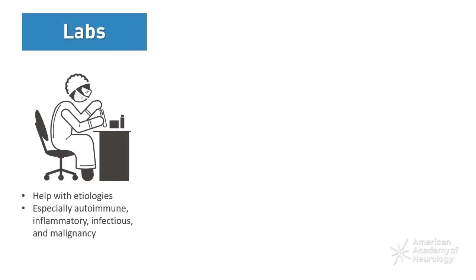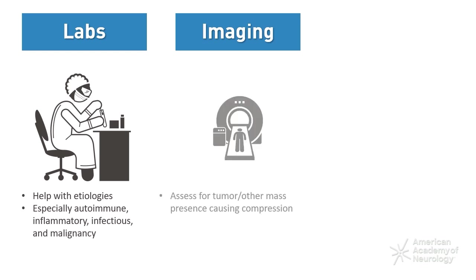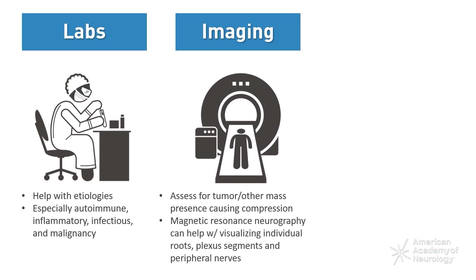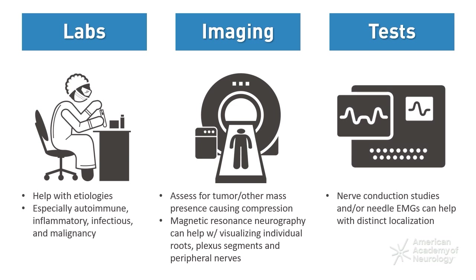Diagnostic tests can help identify possible etiologies including idiopathic, autoimmune, inflammatory, infectious, microvascular from diabetes, or malignancy. Consideration may be given to imaging studies, particularly MRI, to assess for tumor or other mass presence causing compression of the plexus. Magnetic resonance neurography can visualize individual roots, plexus segments, and peripheral nerves, and can sometimes suggest the presence of inflammation, nerve edema, demyelination, compression, and associated muscle denervation. Additionally, nerve conduction studies and needle EMG are useful for lesion localization and can help provide prognostic value by determining injury severity.